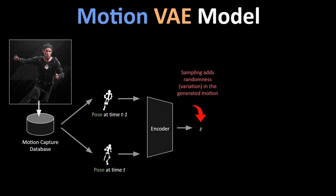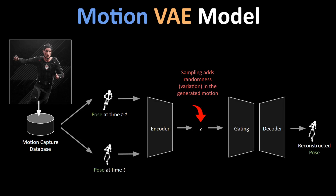This ensures that the output pose is not repetitive, and these slight variations make the combined motion look more natural and realistic. Then the decoder reconstructs the pose based on the output of a mixture of experts gating network. This network ensures that the individual elements of the output pose, like hand or body movements, are consistent with the overall motion of the body.